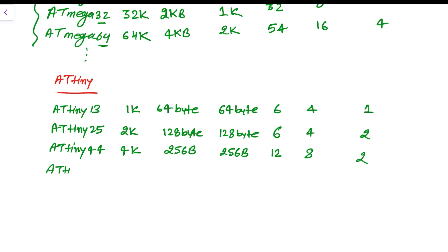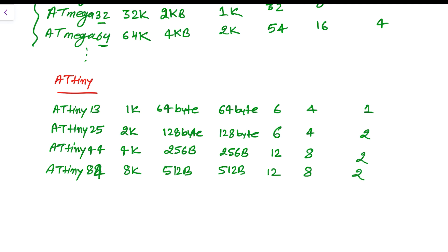The final member of the ATtiny family is ATtiny 84. It has 8KB flash, 512 bytes (0.5KB) RAM, 0.5KB EEPROM, 12 I/O pins, 8 ADC channels, and 2 timers.